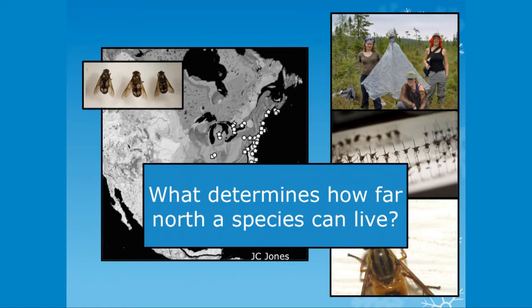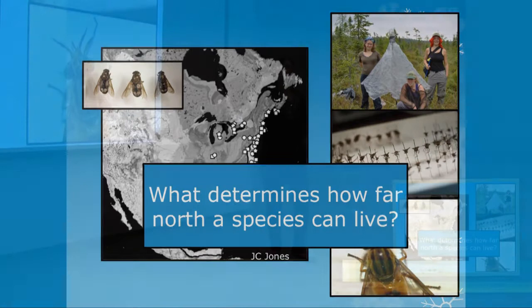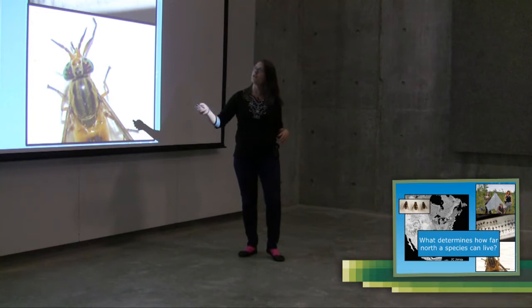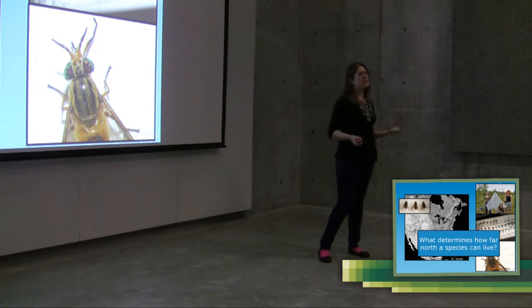And there's something that should be really obvious to you when you look at this map. A deer fly doesn't live everywhere. It only lives so far north. It only lives so far west. It doesn't seem to live in the ocean. And this is something that's true for almost every organism on Earth.